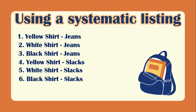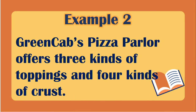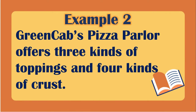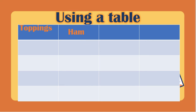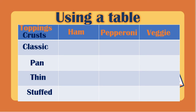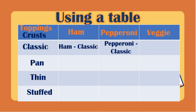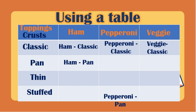Let's have example number two. Green Cabs Pizza Parlor offers three kinds of toppings and four kinds of crusts. We will represent this using a table first. We have the toppings: ham, pepperoni, and veggie. For the crust, we have classic, pan, thin, and stuffed. Combining topping and crust, we first have ham classic, pepperoni classic, veggie classic, then ham pan, pepperoni pan.